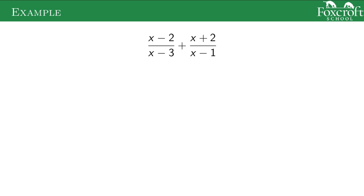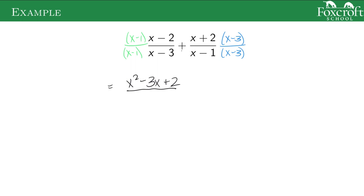Now let's look at a problem with binomial denominators, thinking about how to make life as easy as possible. We multiply the right-hand fraction by the left denominator and the left fraction by the right denominator. On top I have to multiply and FOIL binomials together, giving x squared minus x minus 2x plus 2. On the bottom I leave the factors separate. For the other fraction, FOILing x plus 2 times x minus 3 gives x squared plus 2x minus 3x minus 6. Again, leave these separate on the bottom.